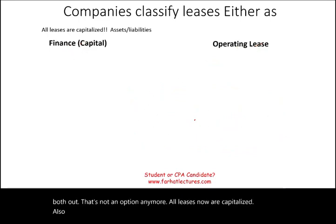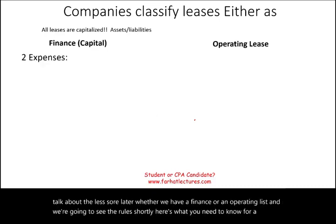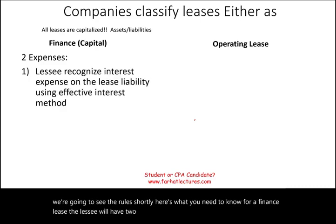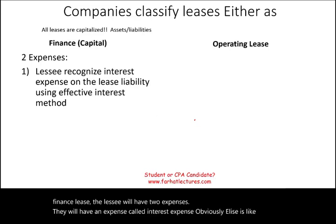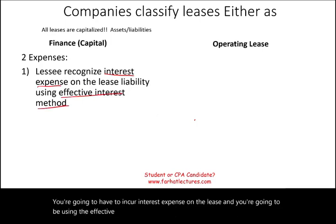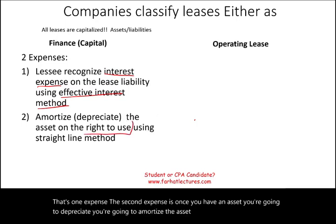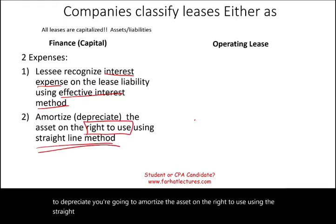I'm going to start by talking from the lessee's perspective — the renter — and we'll talk about the lessor later. For a finance lease, the lessee will have two expenses: an interest expense, because a lease is like a loan, calculated using the effective interest rate method; and a depreciation or amortization expense on the right-of-use asset, using the straight-line method. So you're going to have two separate expenses.